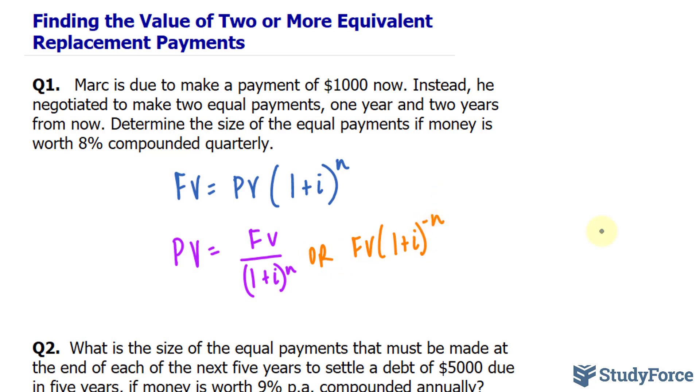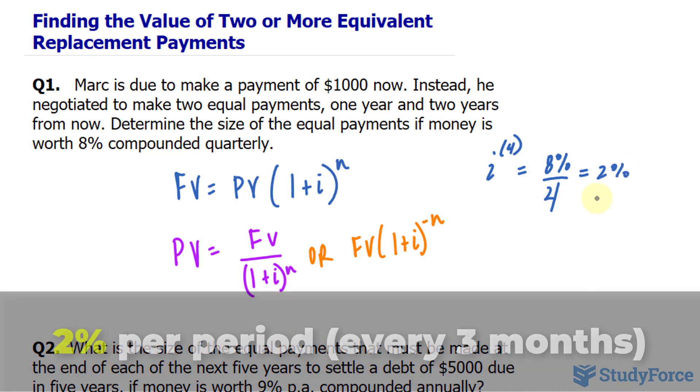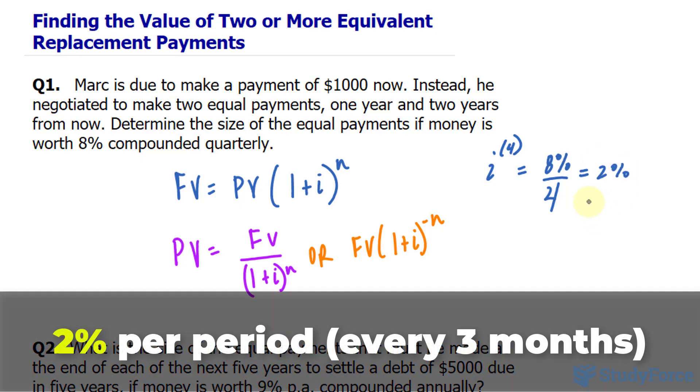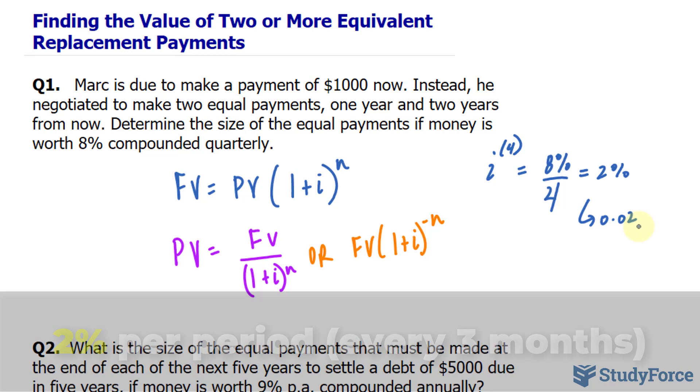Also keep in mind that we'll be replacing i, which is compounded quarterly, represented as i^(4), with 8% divided by 4 because there are 4 periods when it's quarterly. That becomes 2%, dividing by 100% gives us 0.02. So whenever we see an i, we'll be replacing it with 0.02.